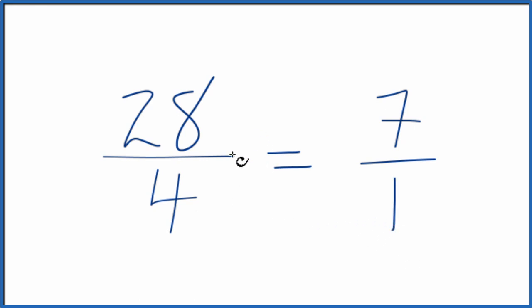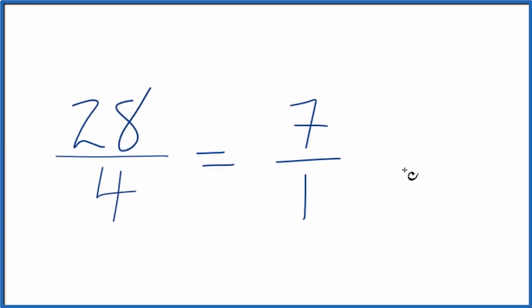So we can simplify the fraction 28 fourths down to 7 over 1. And we can even make this a little bit simpler, because 7 divided by 1, that's just 7. So we could just write the whole number 7.